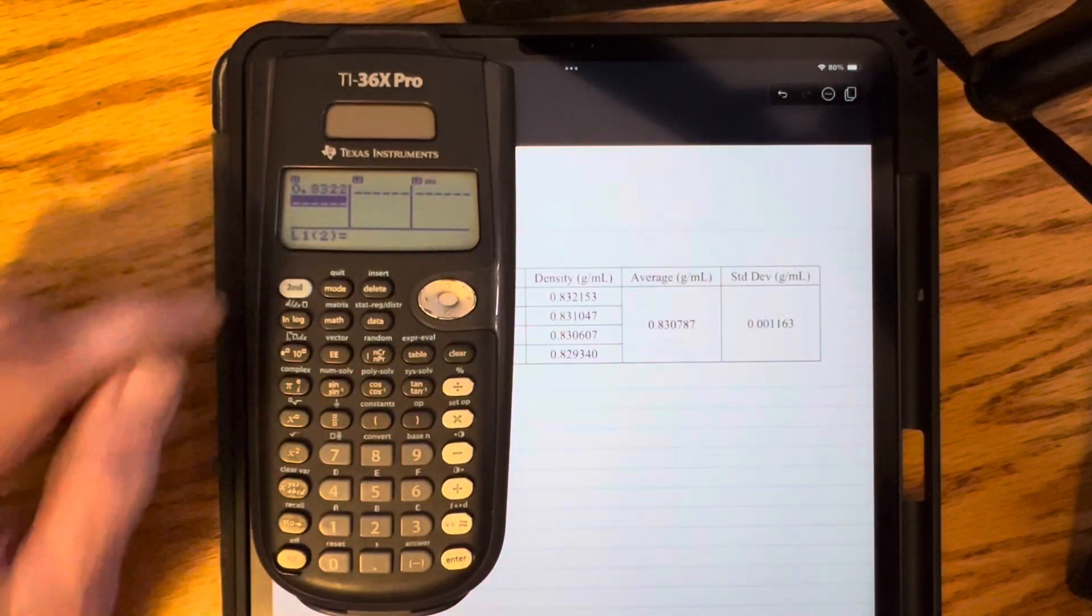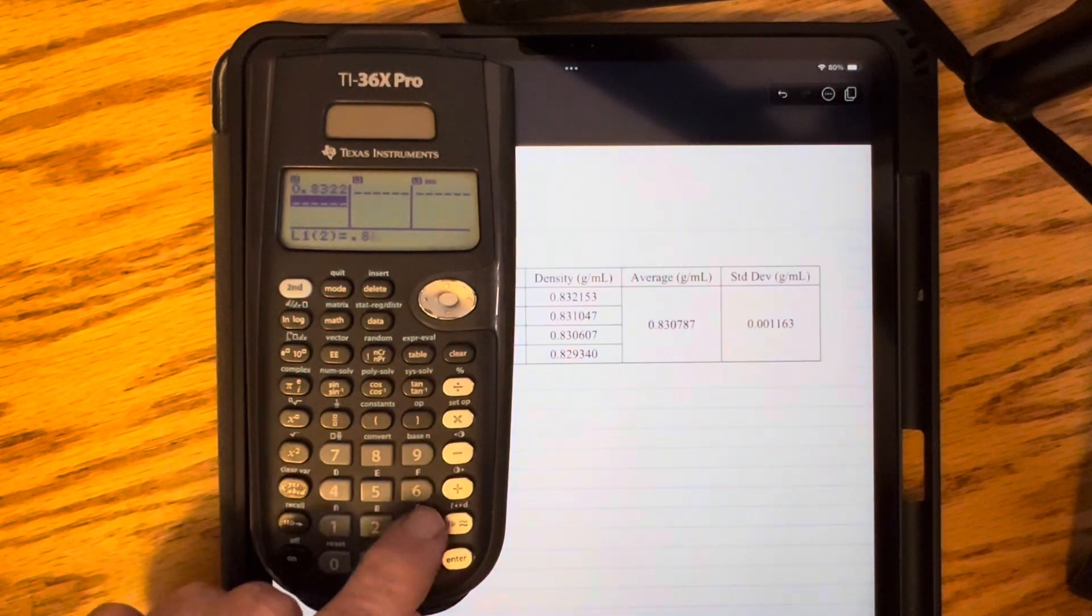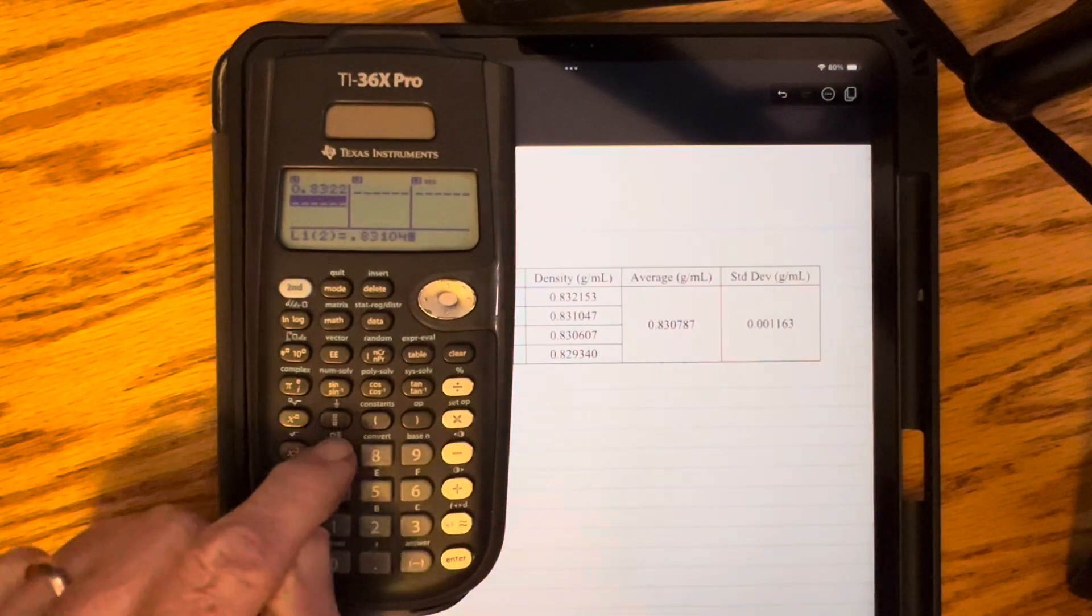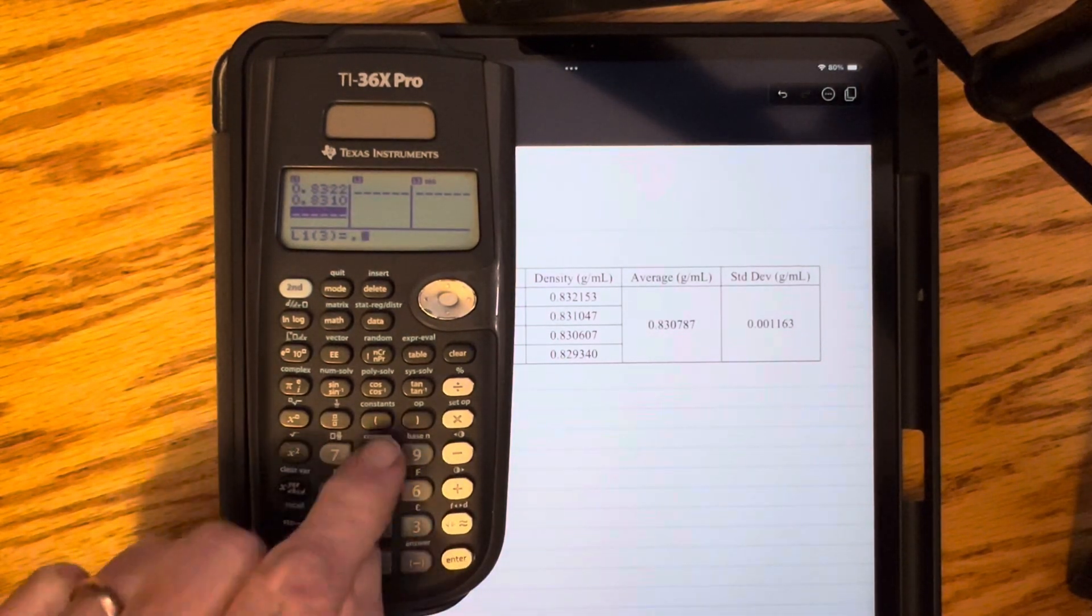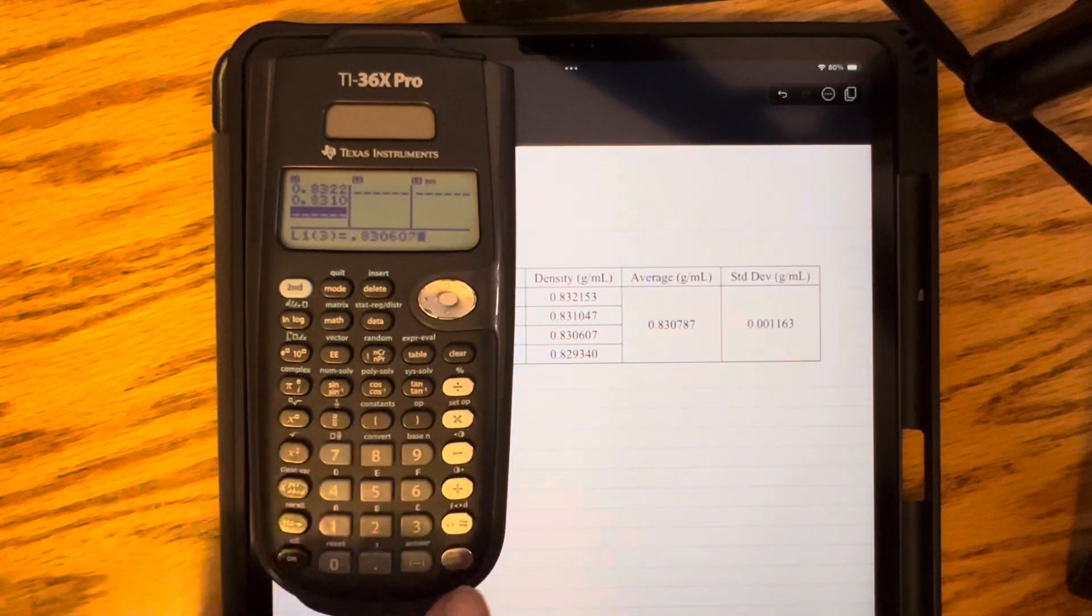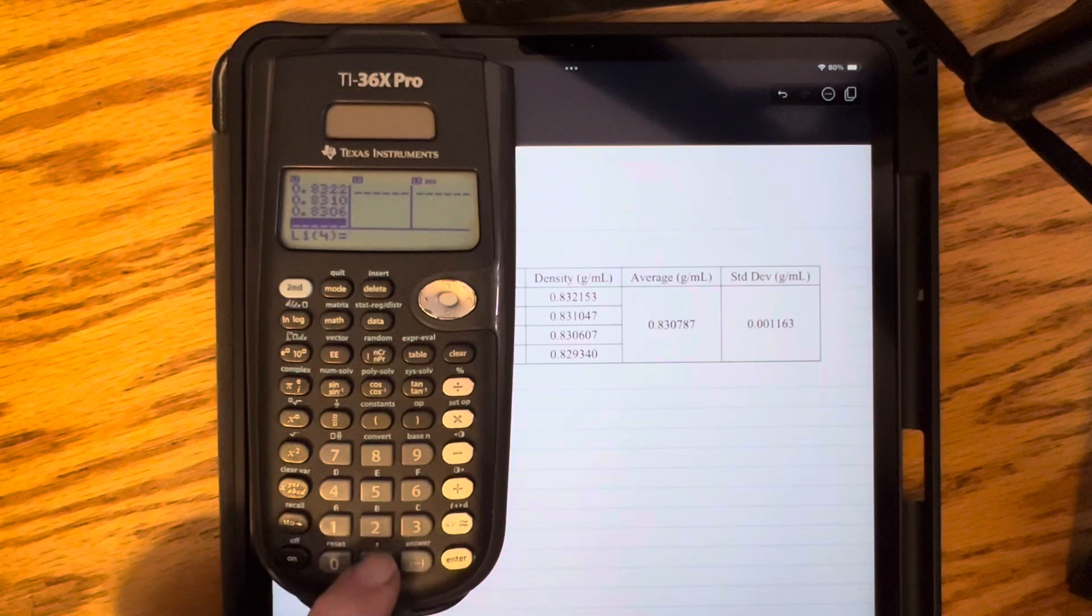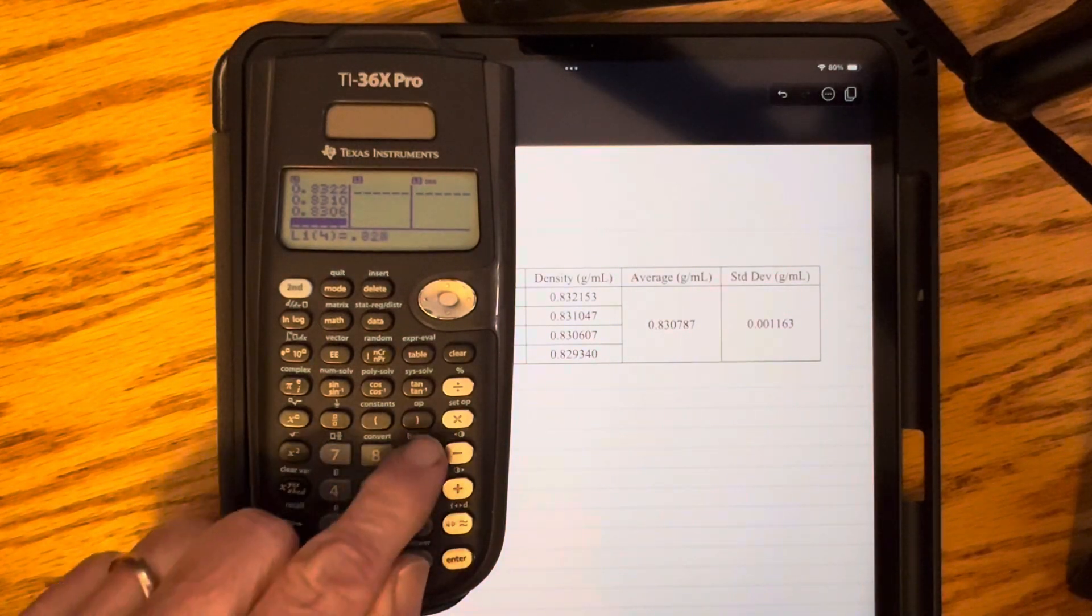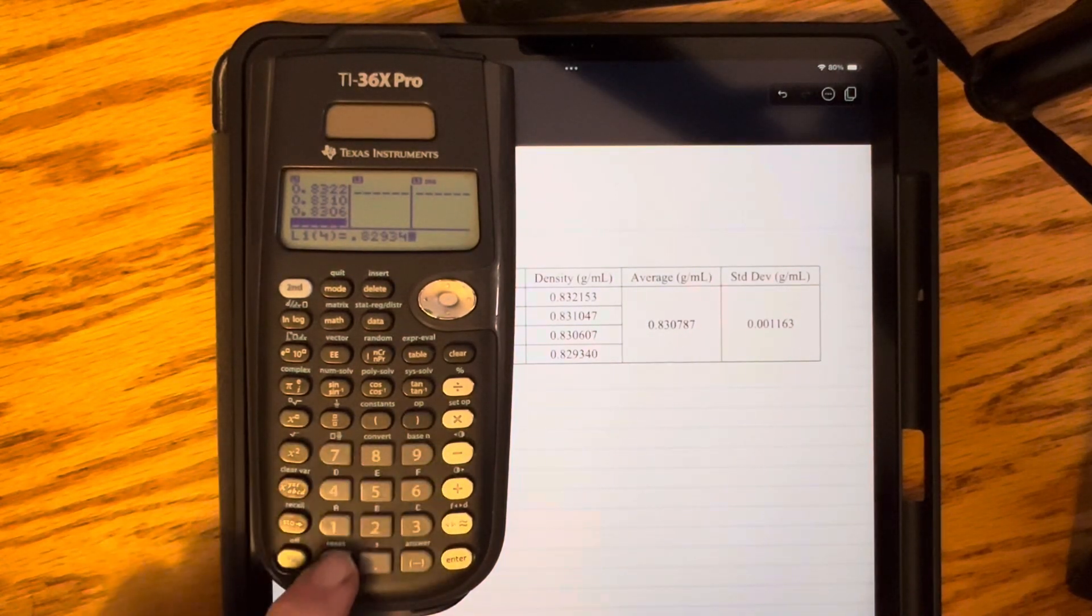So this will be value number 2, Enter, value 3, Enter, and value 4, Enter.